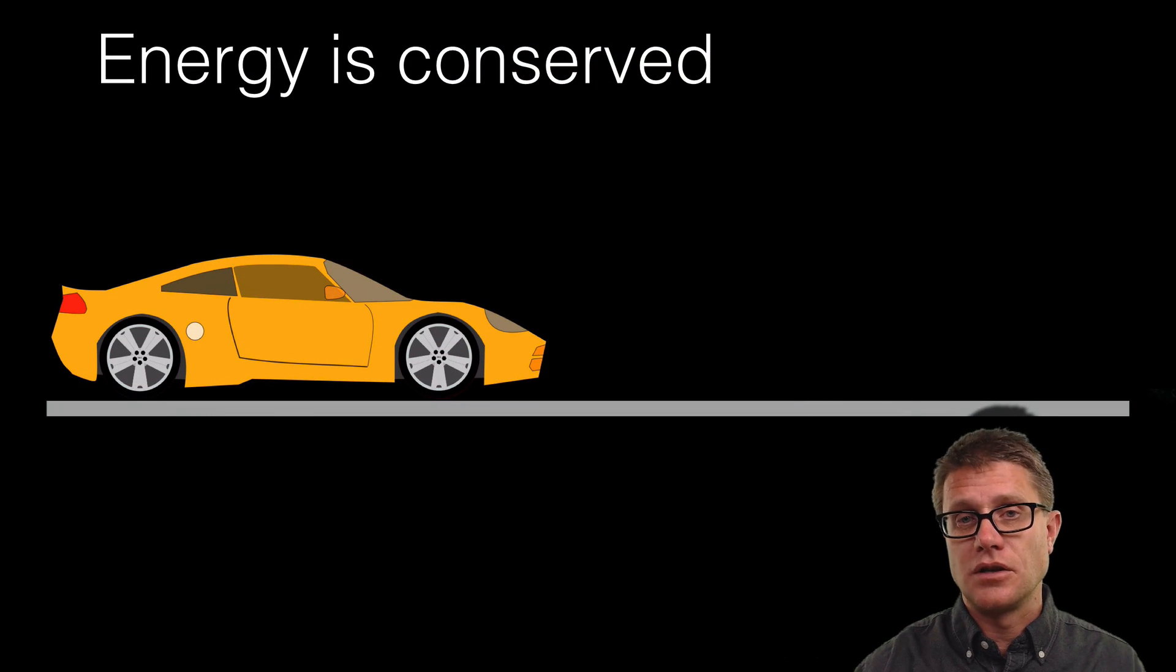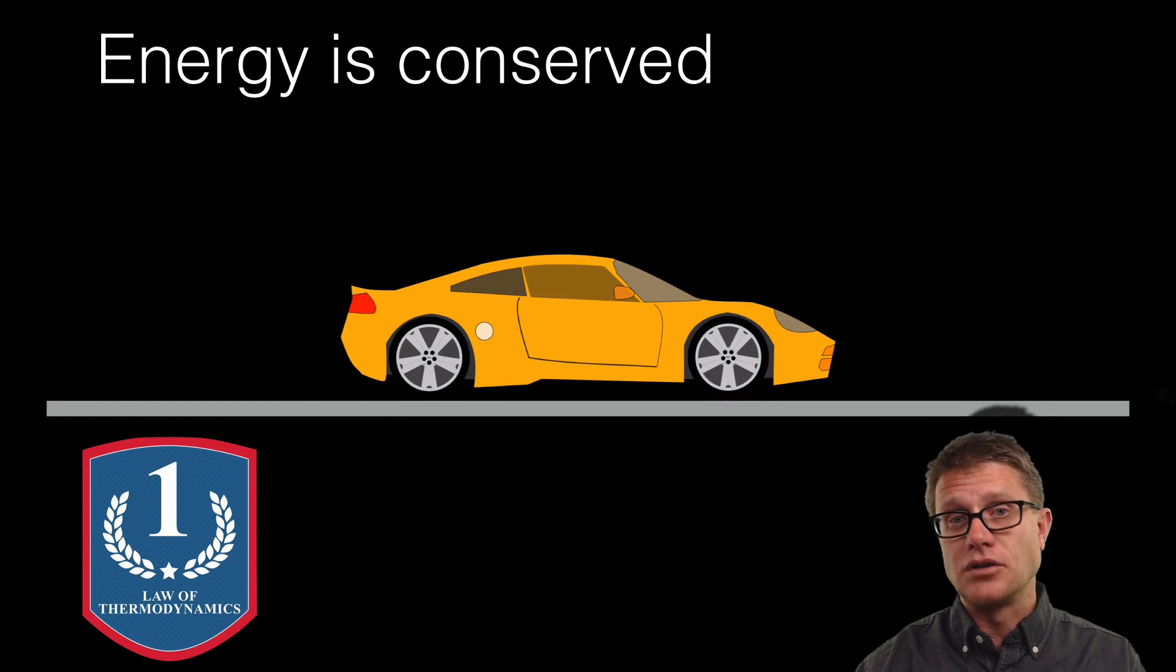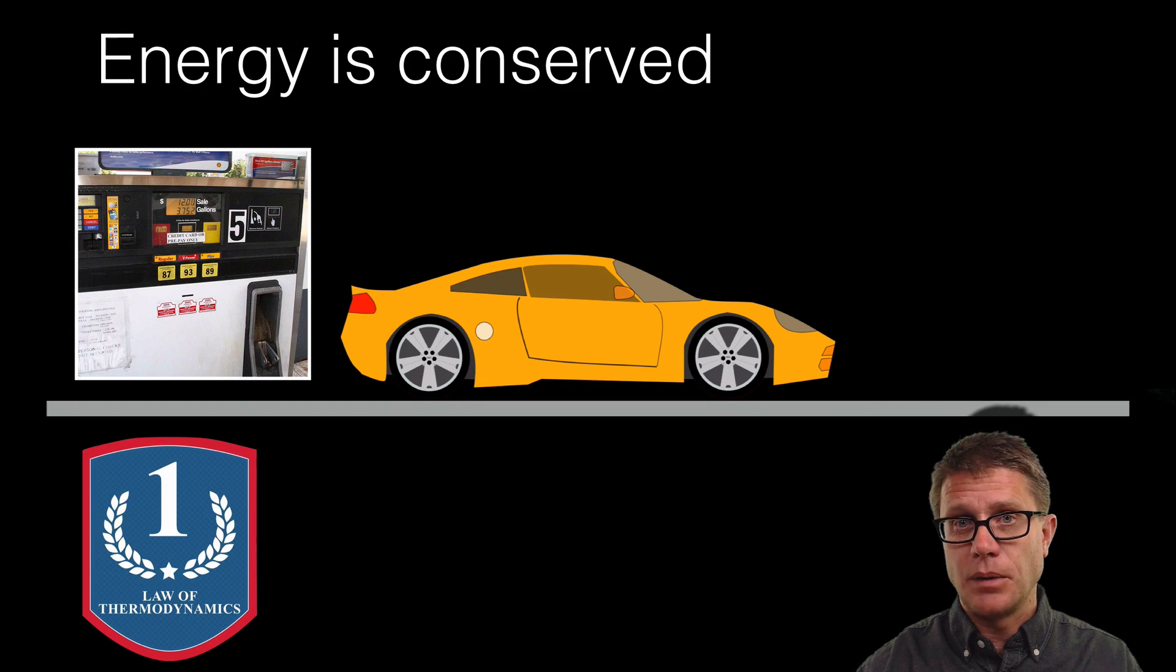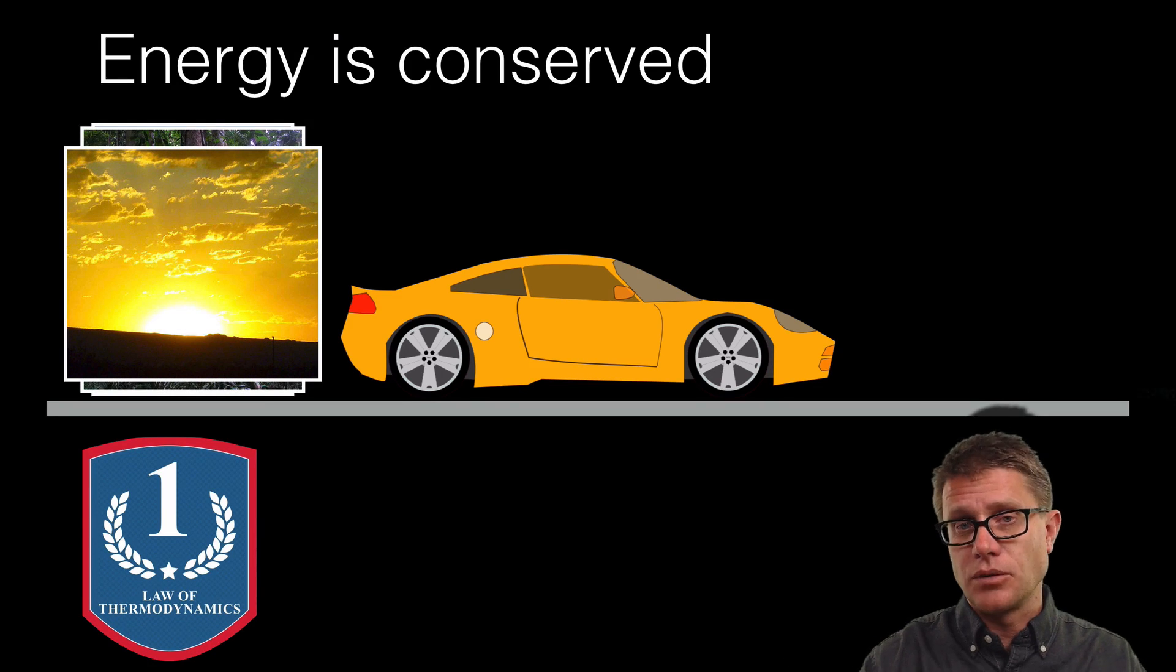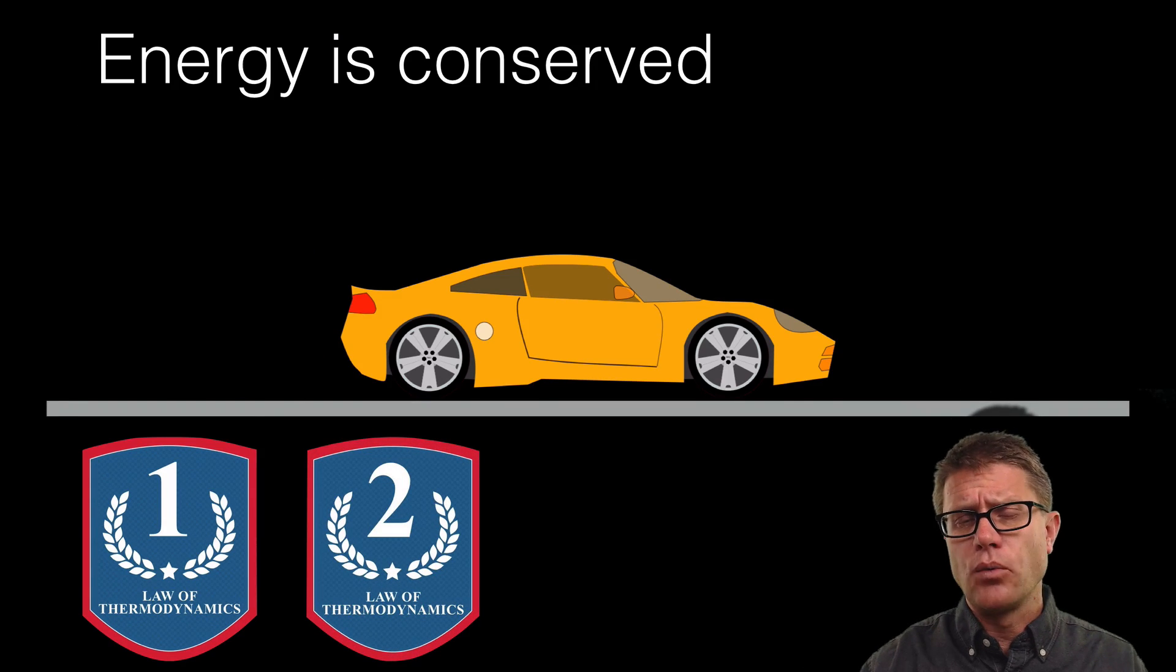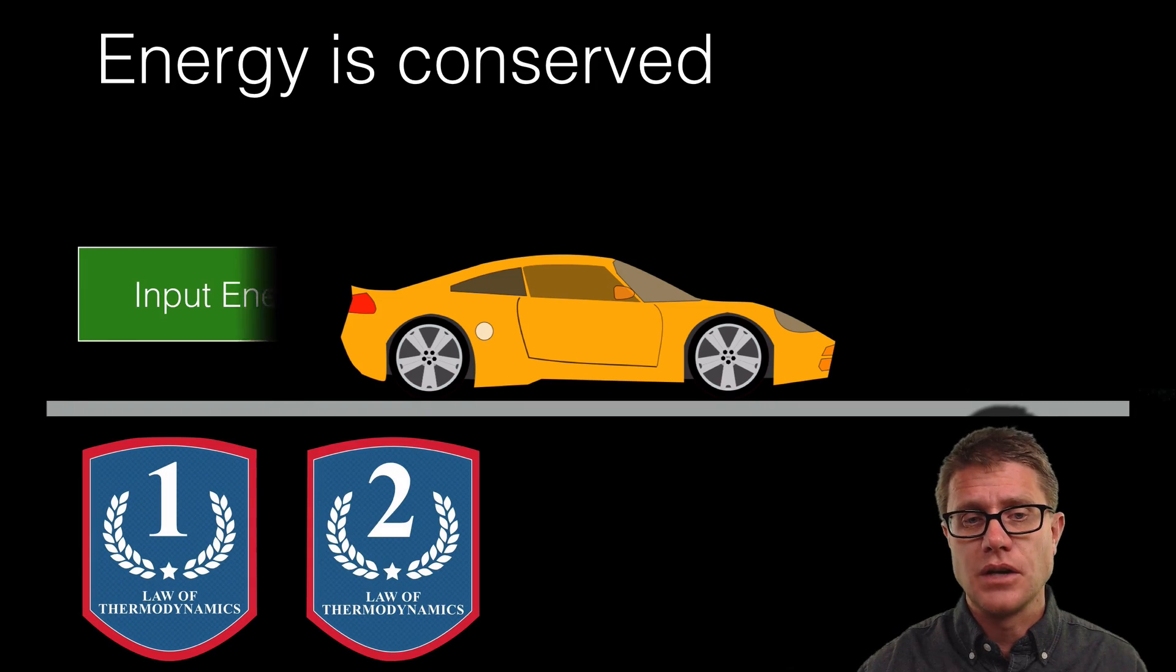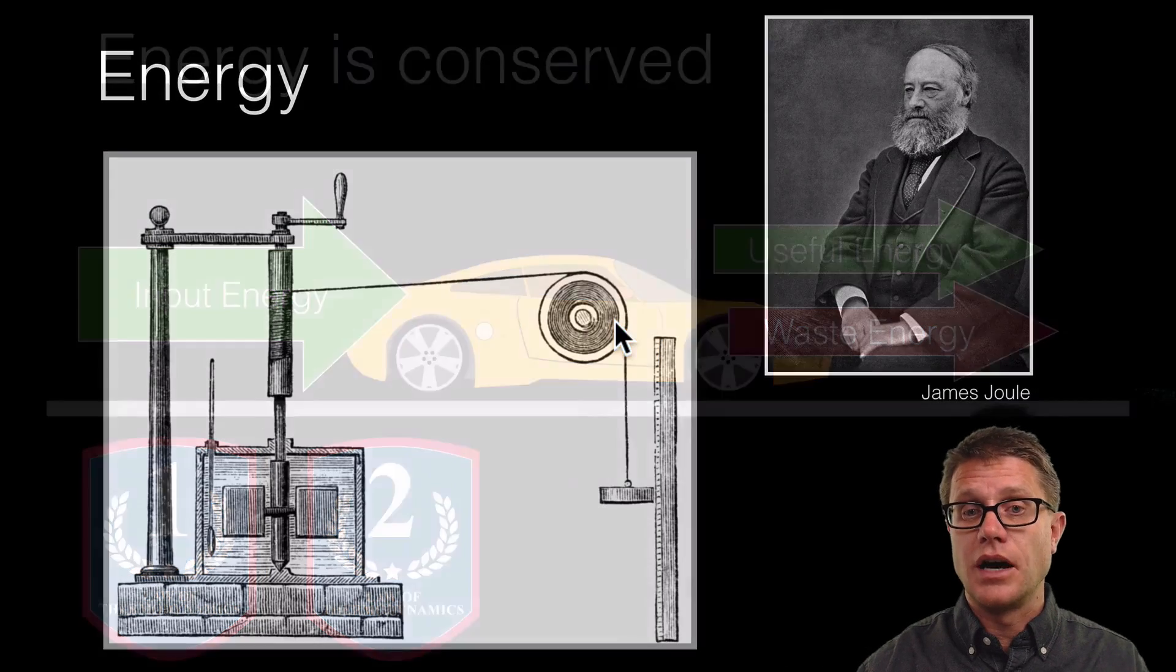The key point is that energy is conserved. That's the first law of thermodynamics. If we drive this car from point A to point B, we used energy. We did work on that car. Where did it come from? Gasoline. Before that, oil. Before that, probably some kind of tree. Before that, the sun. We're just converting one form of energy to another. The second law of thermodynamics talks about what happens to that energy as we do these conversions. We have input energy and output energy. Some of that is useful energy in the motion of the car. But a lot of it is waste energy: heat and sound. Eventually all of that energy becomes non-usable or heat.